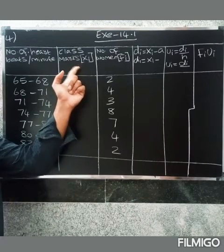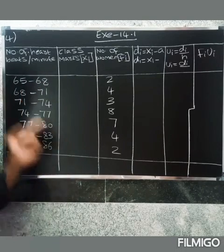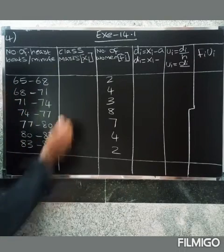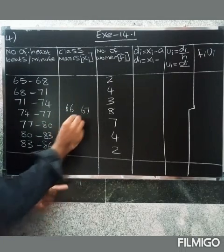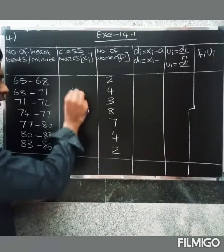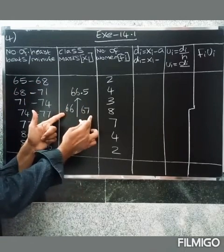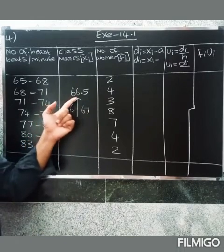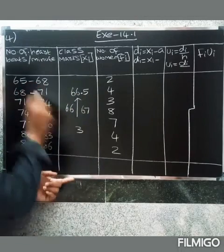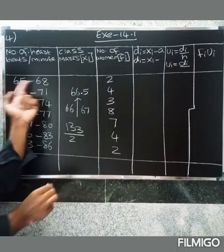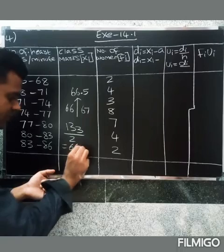So now we have class marks Xi. Here we have 2 numbers in the middle. Class marks are calculated as upper limit plus lower limit divided by 2. So here we have 65 and 68. The middle values are 66 and 67, so the middle value is 66.5. Verify: 65 plus 68 equals 133, divided by 2 gives 66.5.